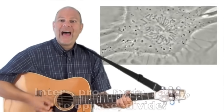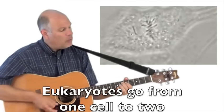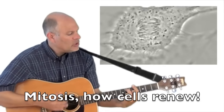Mitosis, a chromosome will ride in a chrome and in anaphase divide. Eukaryotes go from one cell to two. Mitosis, how cells renew.